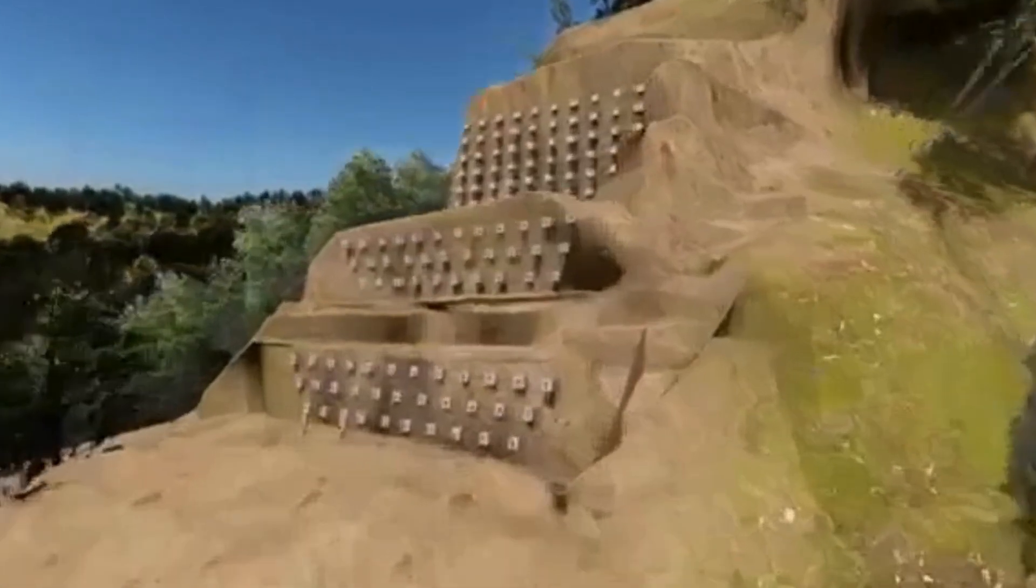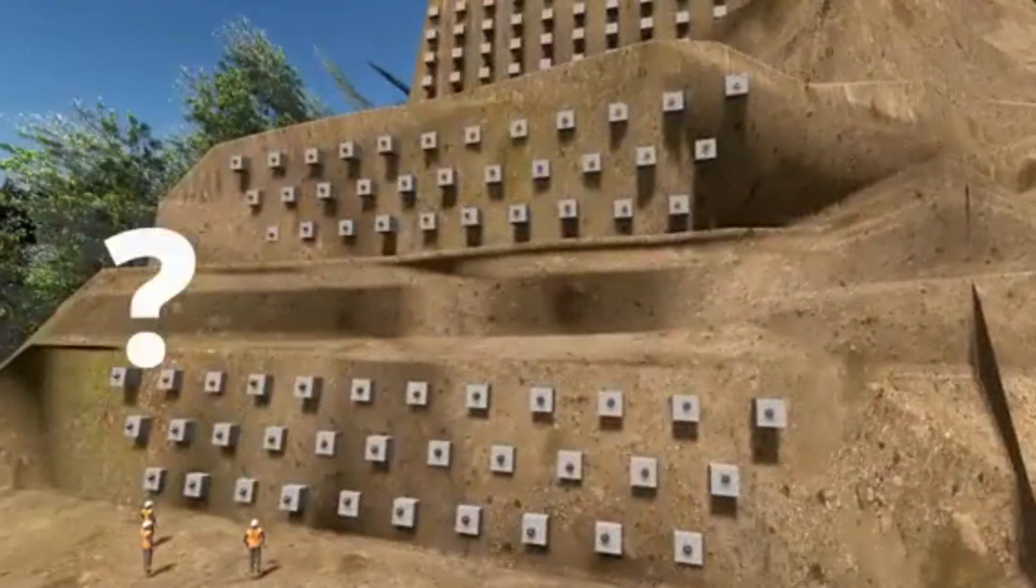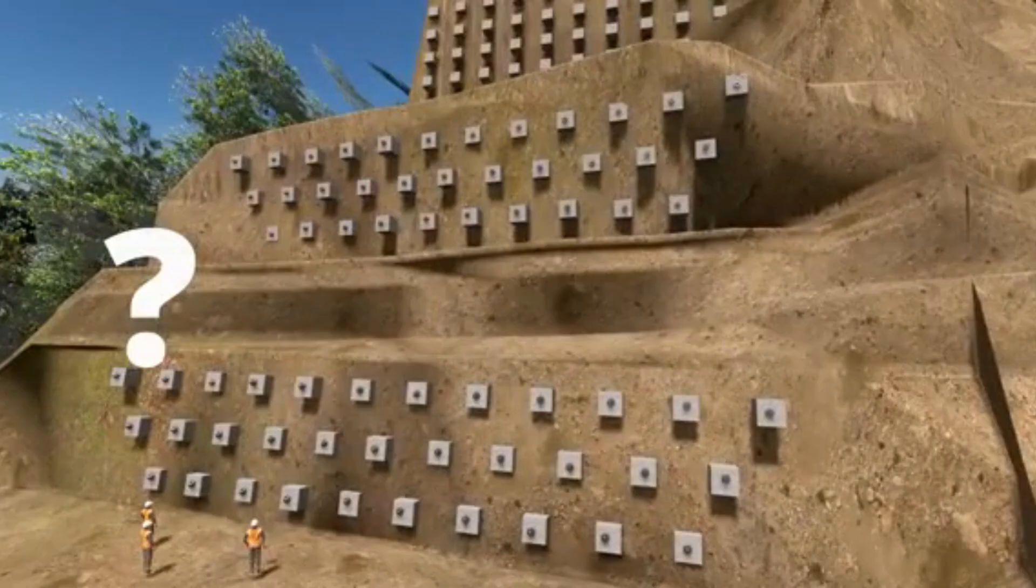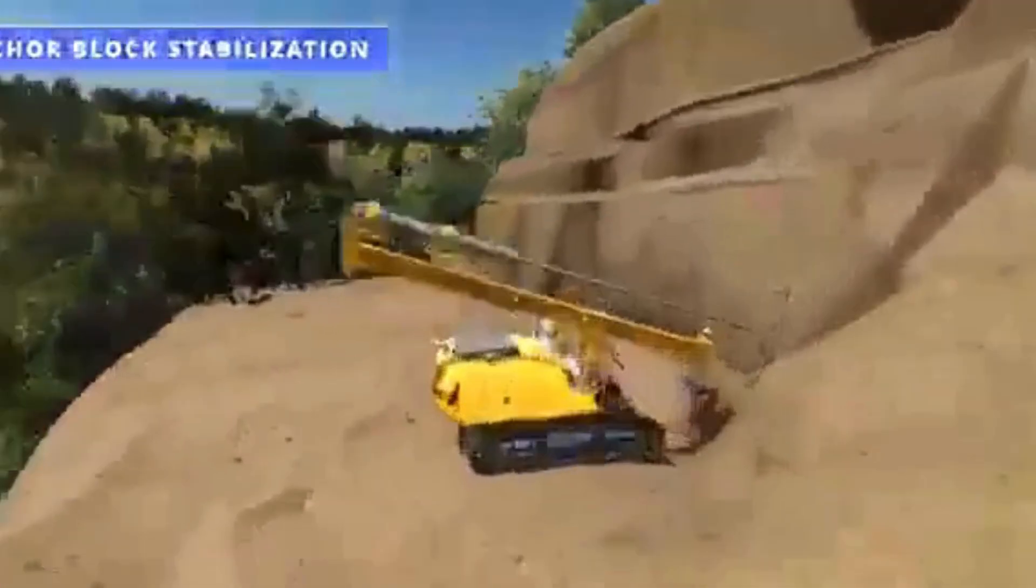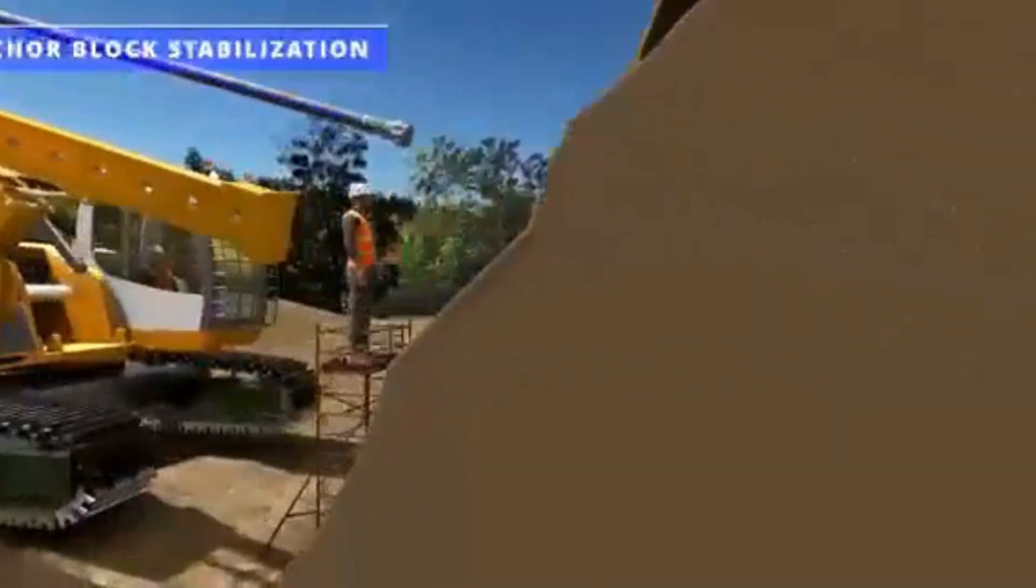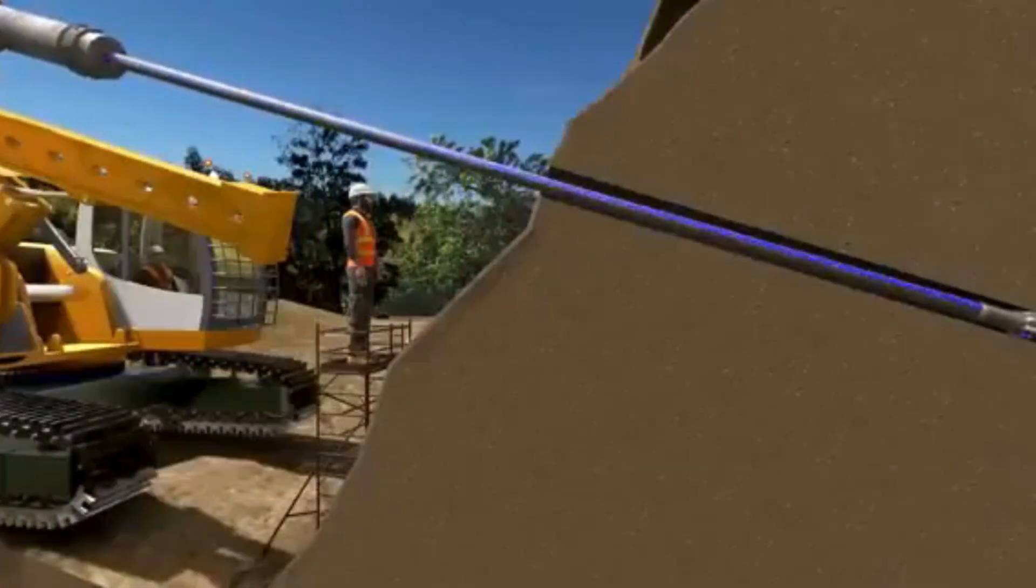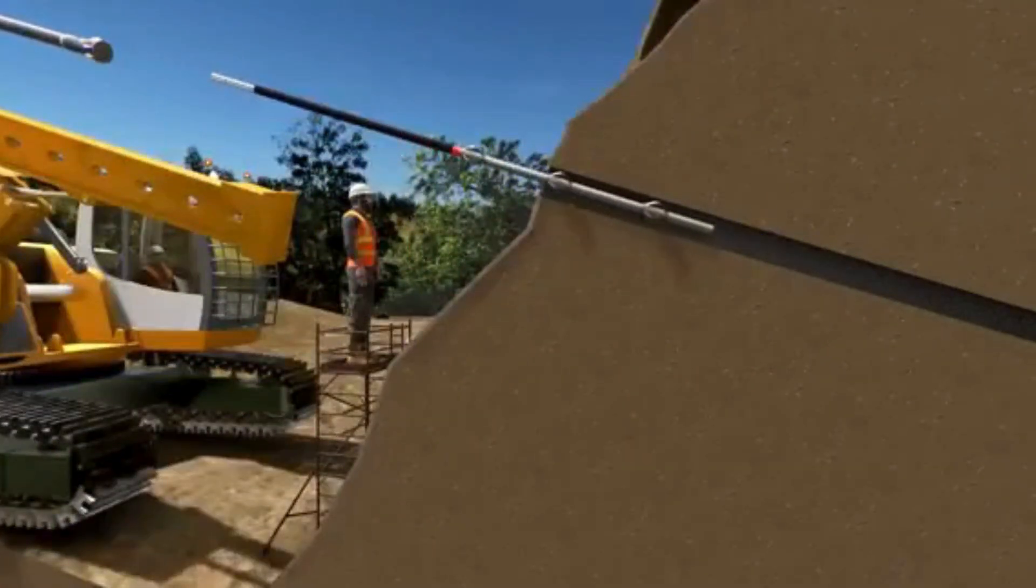You might have seen a lot of strange-looking blocks in construction photographs of Chenab Bridge. This is a smart slope stabilization technique called anchor block stabilization. In this method, the workers make holes on the slope. After that, they insert a special rod with a lot of tendons in it.